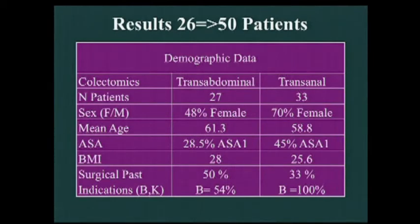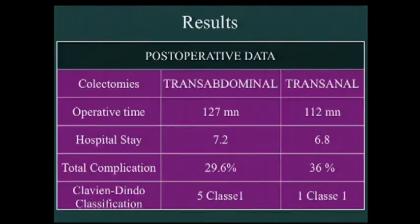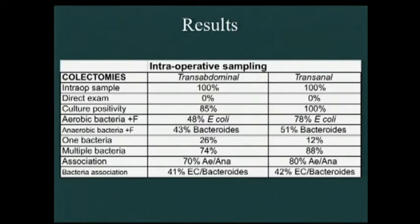Regarding results, we have now included more patients than reported in the abstract — 50 patients total: 27 transabdominal and 33 transanal. Sex distribution and operative time were similar between groups, with no more complications. Importantly, direct examination showed no bacteria in any sample; however, all samples after transanal extraction were culture-positive, while only 85% were positive in the transabdominal group — a surprising finding, though there was no difference in clinical infection rates.